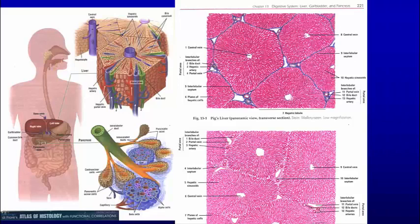If we look at the liver, we see in a pig liver — which is very good because they have connective tissue between the lobules. This is one lobule, another lobule, another lobule that we see here, and in there we see the central vein. The central vein is right in here and blood comes in from these portal radicals. The portal radical is composed of the portal vein, the bile duct, and the hepatic artery.